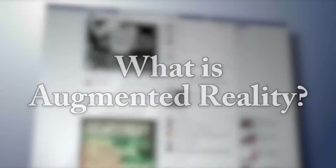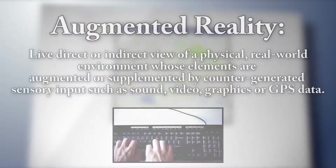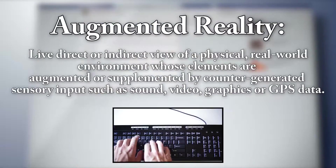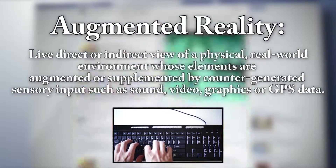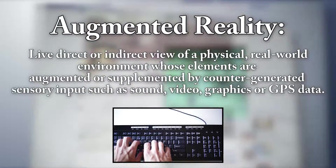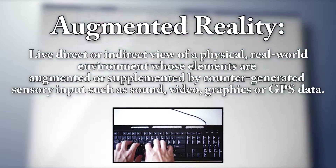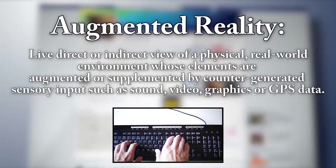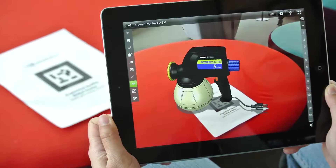What is augmented reality? According to the internet, augmented reality is defined as a live direct or indirect view of a physical, real-world environment whose elements are augmented or supplemented by computer-generated sensory input such as sound, video, graphics, or GPS data.